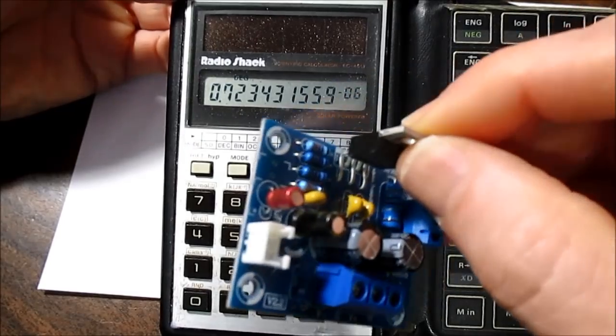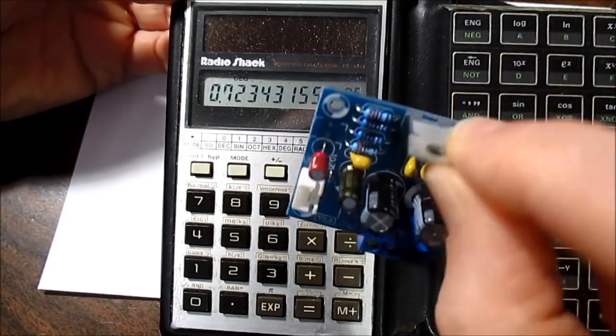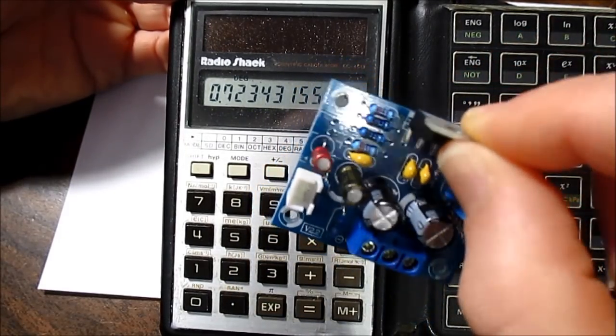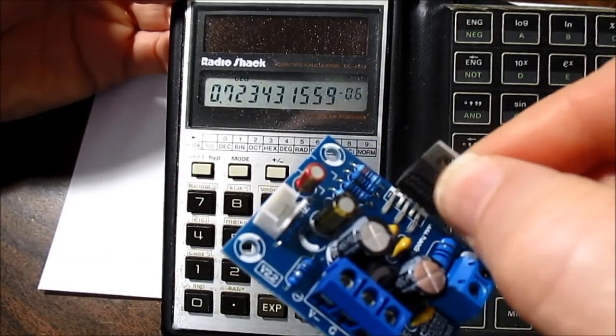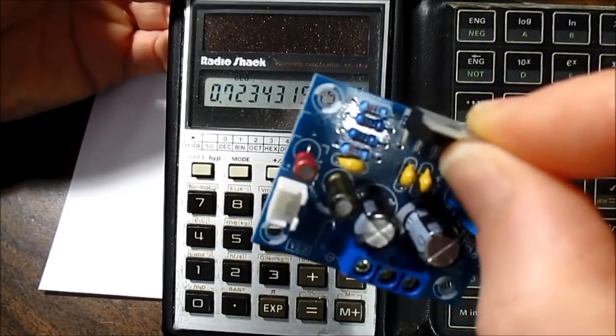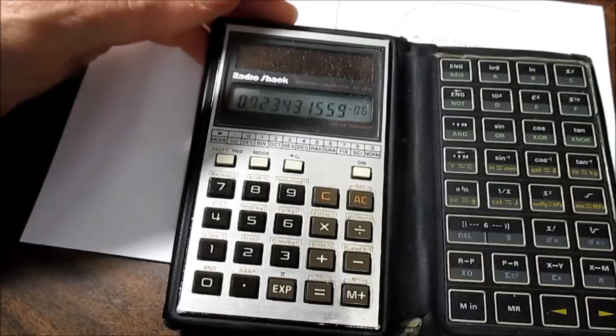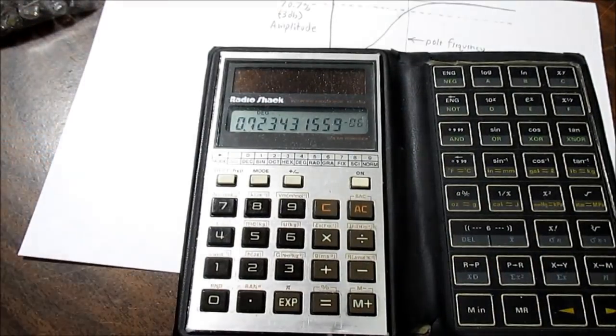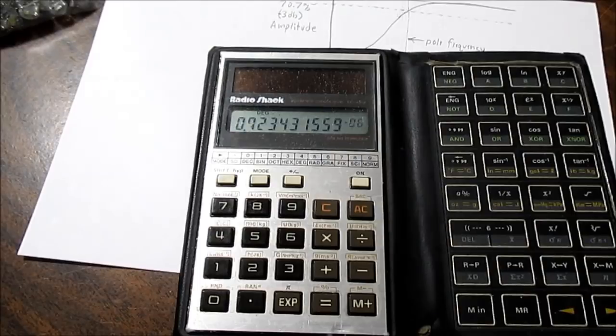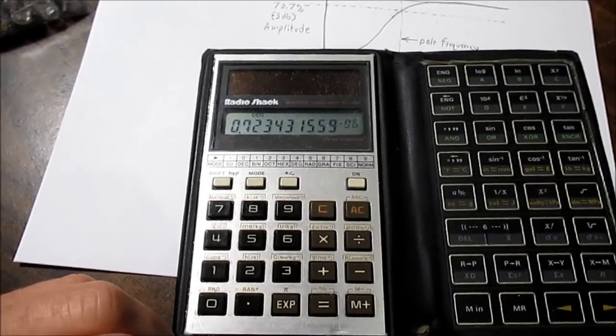1 micro-farad is good enough for me for the amplifier. Now, just so you know, they used a 10 micro-farad electrolytic capacitor on this board, which would set the pole frequency down to 0.7 Hz. It's extremely low. A little overdone in my opinion, but it's fine. It'll work.